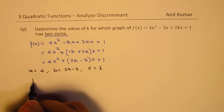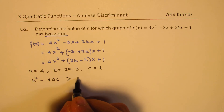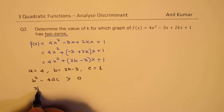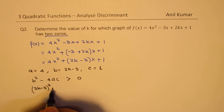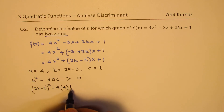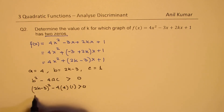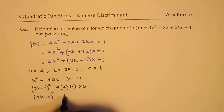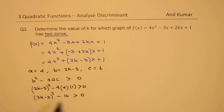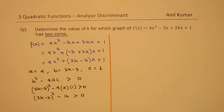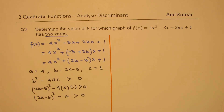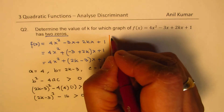Since we need two zeros, we want b² − 4ac > 0. So we write (2k − 3)² − 4(4)(1) > 0, which is (2k − 3)² − 16 > 0. We need to solve this inequality to find the solution. I'll provide two different methods.